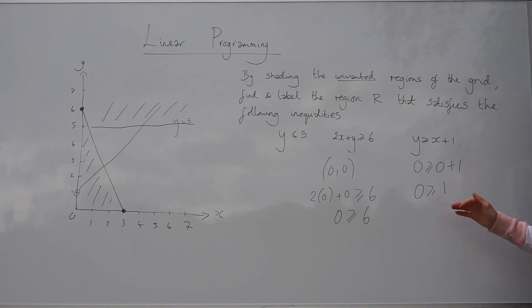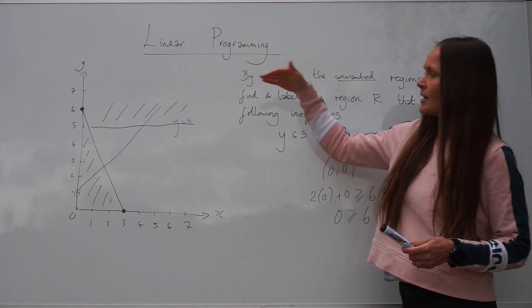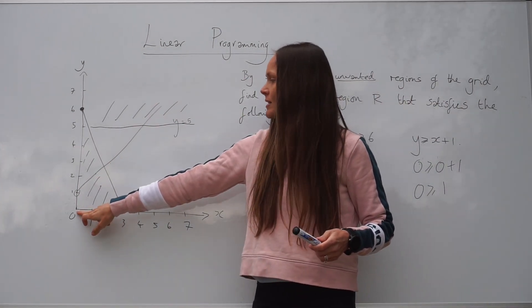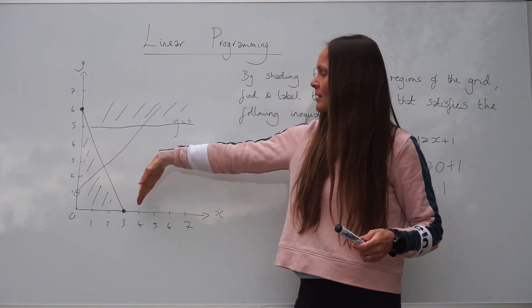So if we look at that straight line, the final one here, 0, 0, the origin, is underneath the graph. Remember, it didn't work. So you need to shade everything underneath the graph.